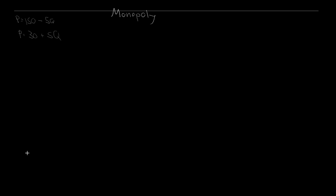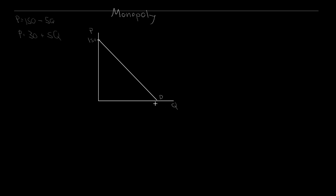What we have to start off is just our standard supply and demand diagram. Our vertical axis is price, our horizontal axis is quantity. We have our demand starting at 150, downward sloping. 150 divided by 5 gives me my horizontal intercept of 30. The way we get that: we take the intercept, divide it by the magnitude of the slope, and we get the opposite intercept. For our supply curve, we're starting off at 30, upward sloping, slope of plus 5 — the same magnitude as our demand curve. This gives us our supply, or our marginal cost.